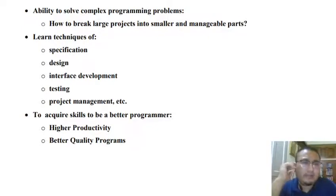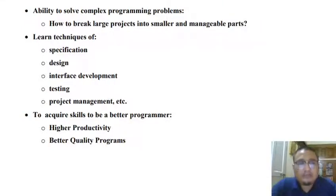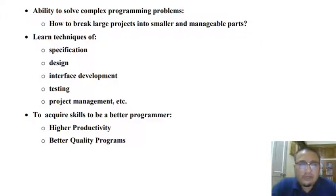The third reason why we need software engineering is to equip one with techniques like specification, design, interface development, how to test, and how to efficiently and effectively manage a software project. Specification refers to creating a representation of the requirement; design is to provide a suitable structure to the system; interface enables a user to interact with the system; testing determines correctness of implementation; and project management covers resource allocation, labor management, time management, schedule, and so on.